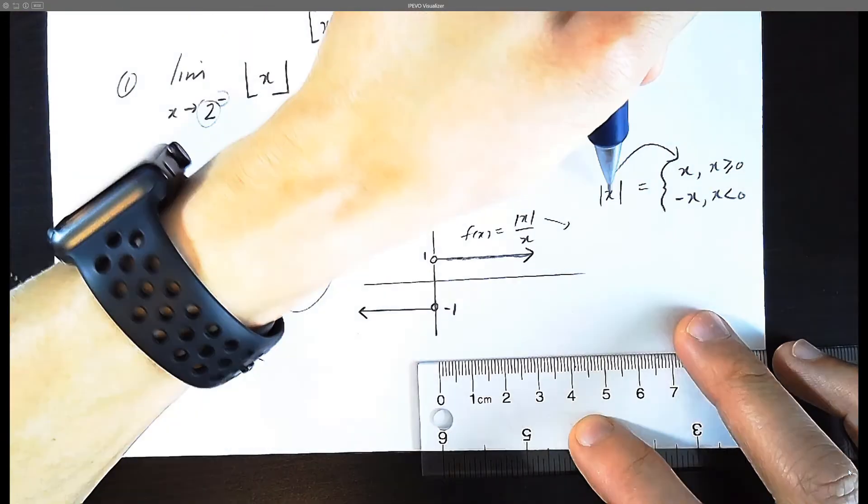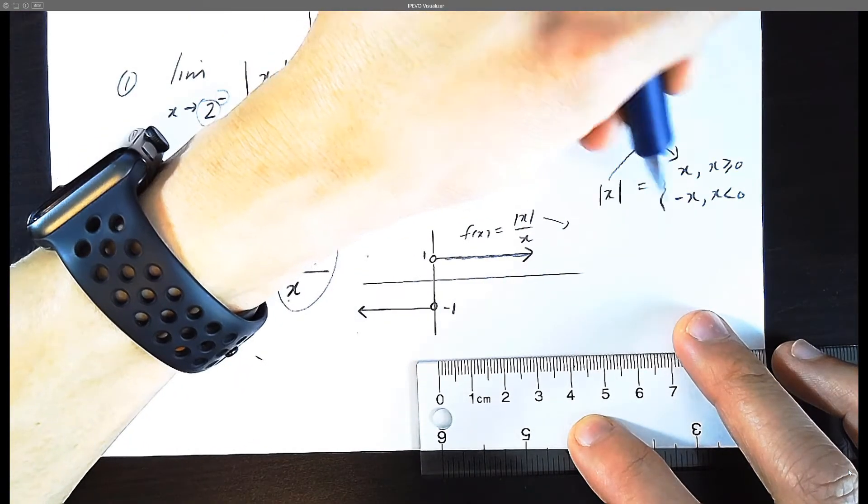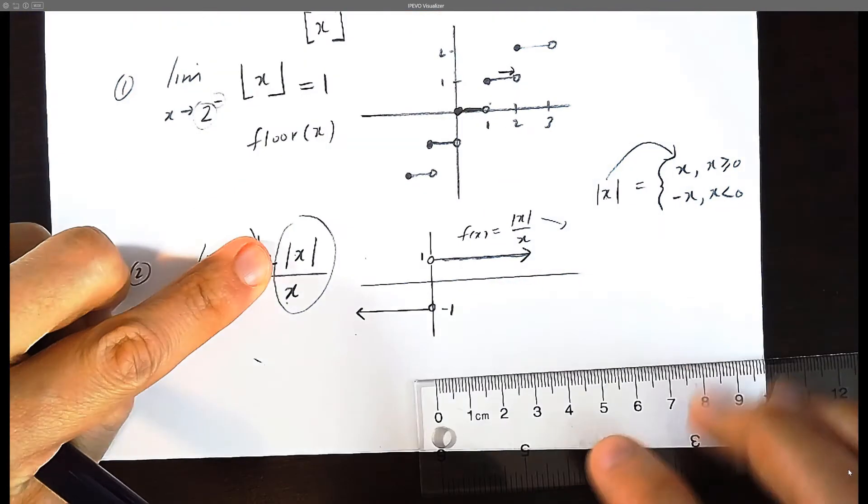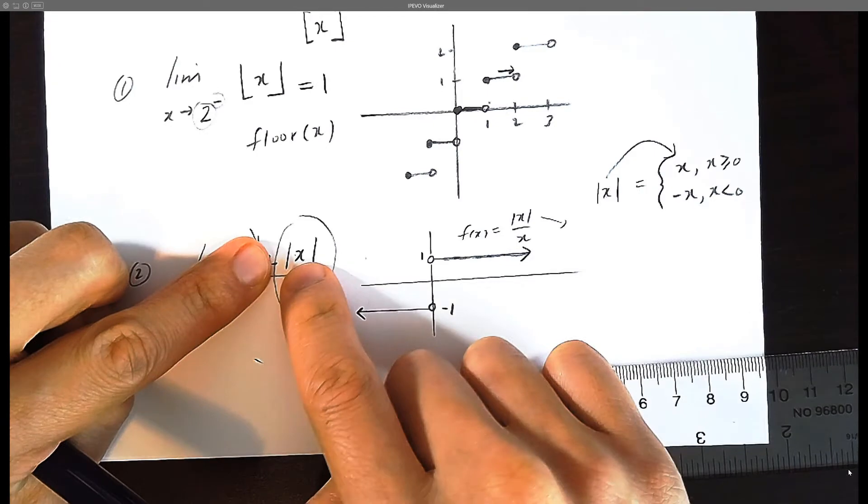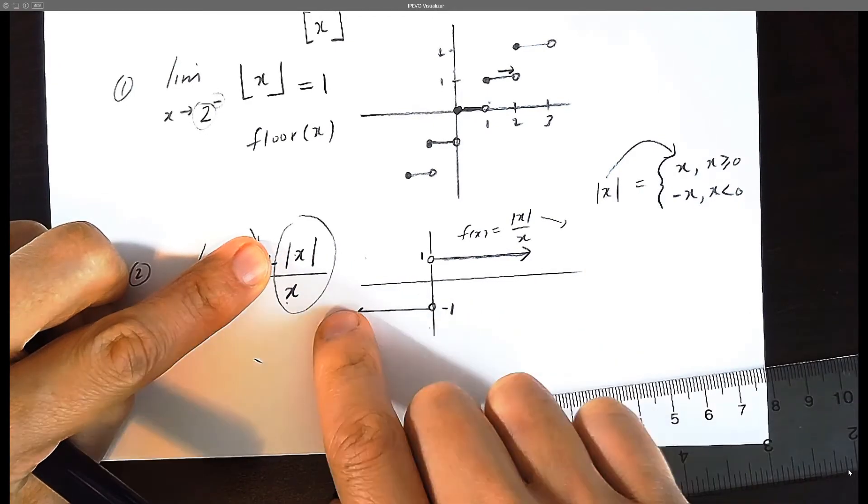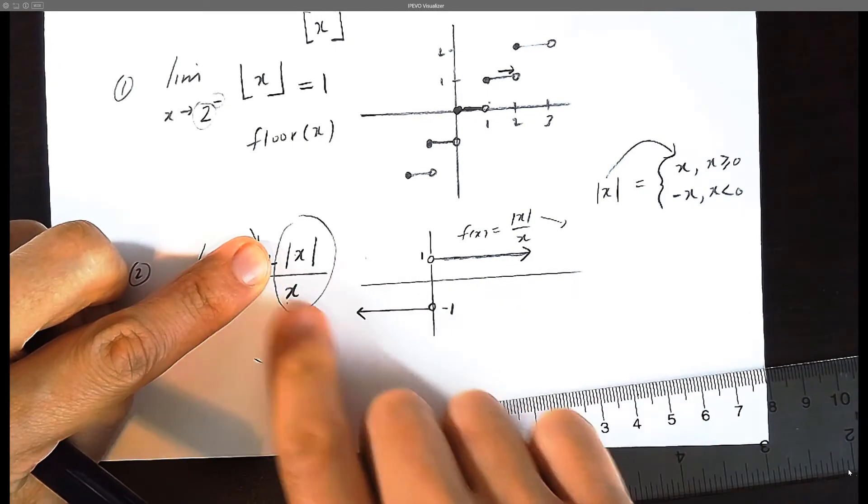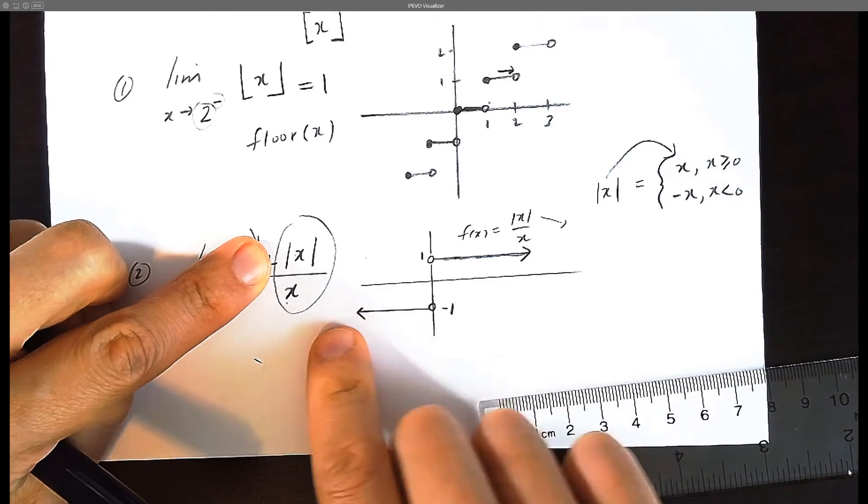Case two, we're going to basically drop the absolute value signs and we're going to put a negative sign in front of it. So when you're focusing on absolute value of x over x, case two, it's going to be negative x divided by x, which would be negative one. So for negative x values on the left hand side, it's going to be this answer over here.